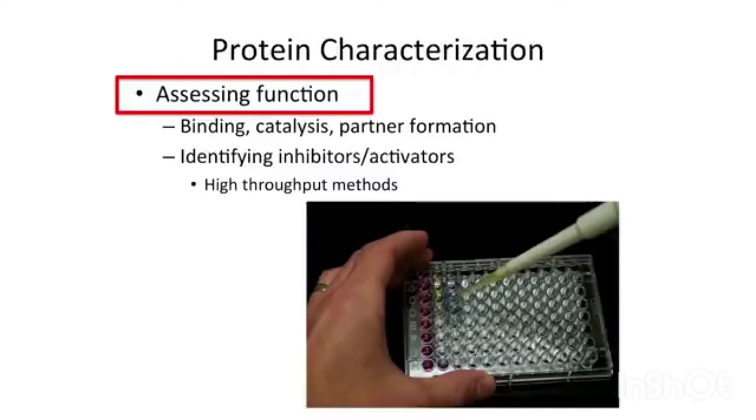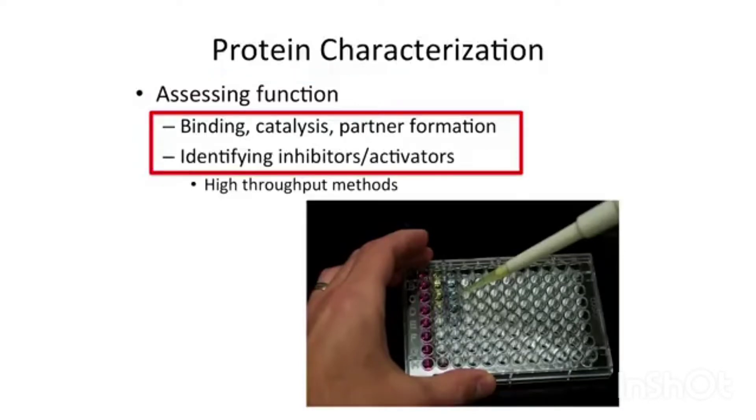The other way to characterize proteins is to figure out what the function is. Sometimes going in, you know, or from a sequence comparison with other proteins, you find this is in the family of X, and therefore it's going to have a function similar to the other proteins in this family. Proteins can have binding capacity. They can be catalytic proteins. Many of them form partners. They also have inhibitors and activators. Figuring out how to identify these is very idiosyncratic because it depends on what the target is, what the reaction is, what the other partners are.